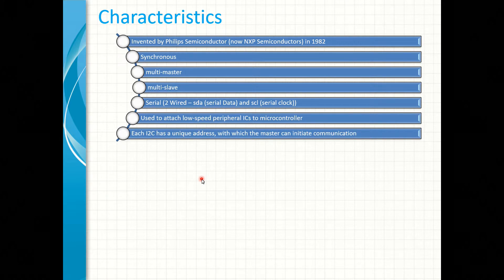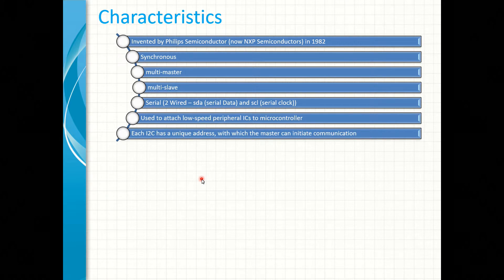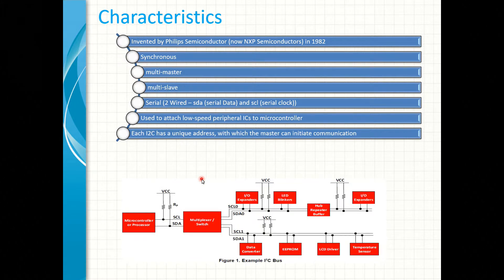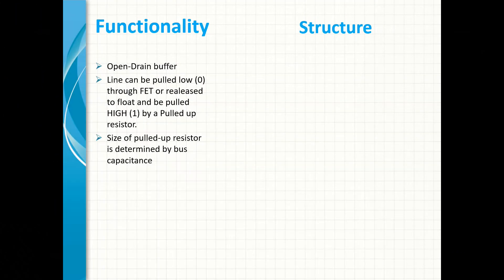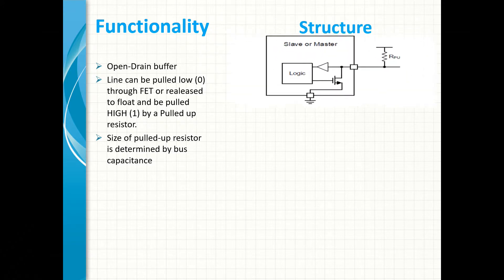One of the largest benefits is that it requires only two wires compared to other interfaces. Each slave node has a unique address with which the master can initiate communication. The example image shows a typical I2C cluster.